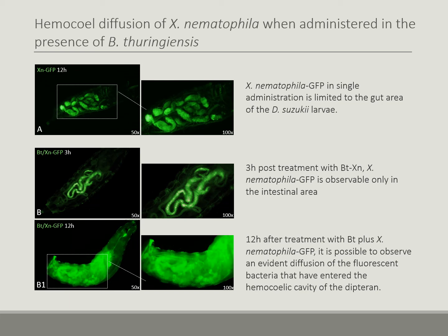We then tested whether the damage caused by Bt toxin could promote the spread of pathogens into the haemocelic cavity of the insect. Figure 8 shows the distribution in the intestinal area of GFP-expressing Xn: three hours after treatment, no diffusion into the haemocelic cavity was observed. However, upon administration of Xn together with Bt, while no diffusion was observed in the first hours, by 12 hours the spread of Xenorhabdus into the haemocelic cavity of the Drosophila larvae was evident.